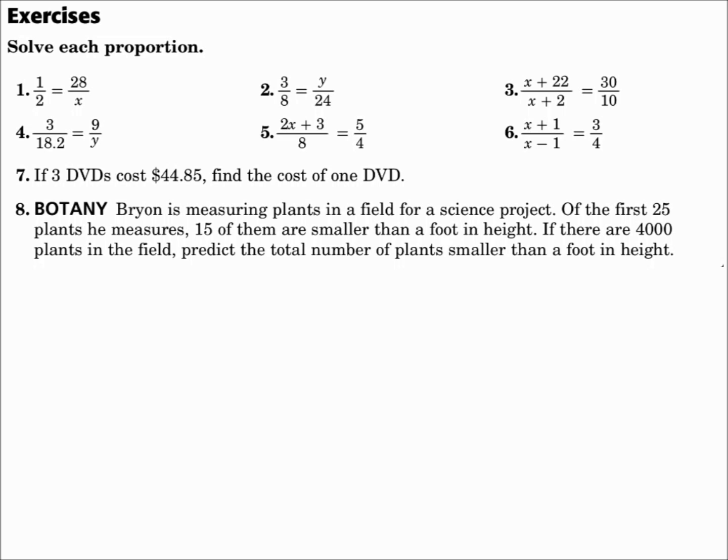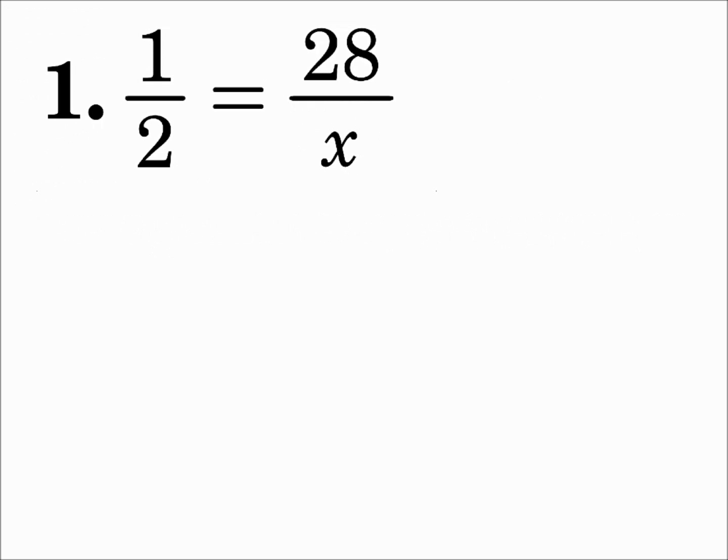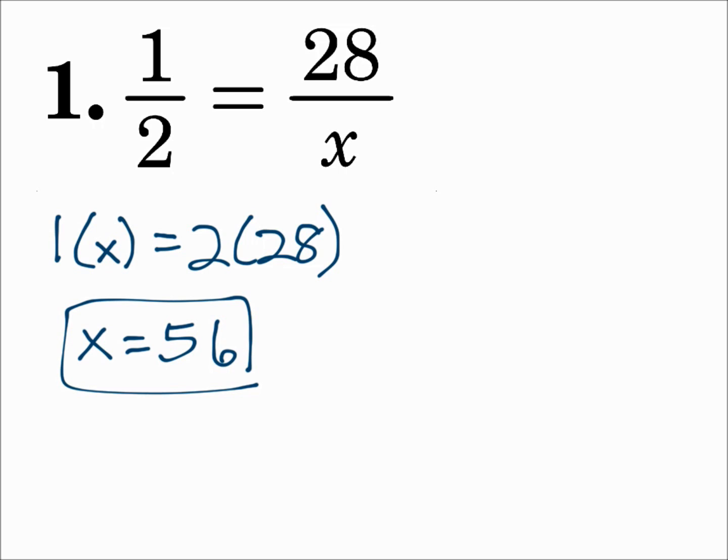Solve each proportion. Number one. One half equals 28 over x. Well this is two ratios that equal each other, so we will cross multiply. 1 times x equals 2 times 28. 1 times x is x and 2 times 28 is 56. So you're finished. To solve a proportion, cross multiply.